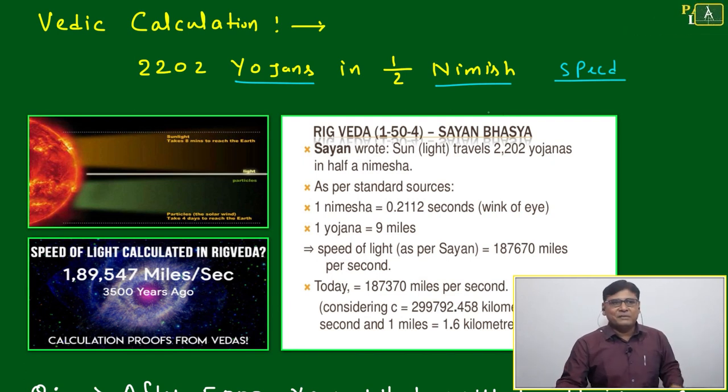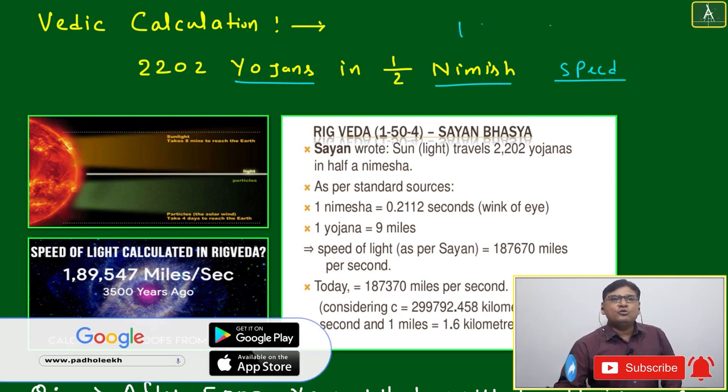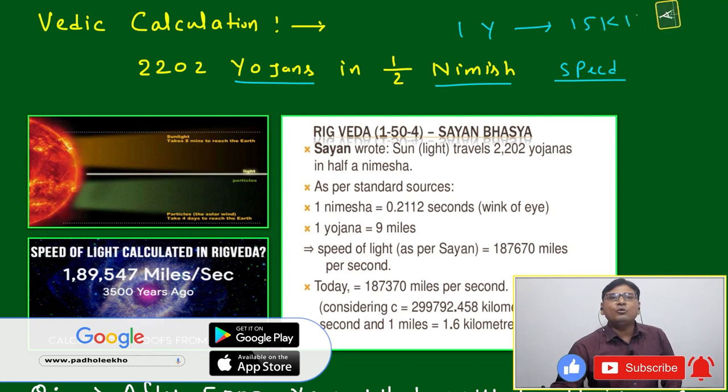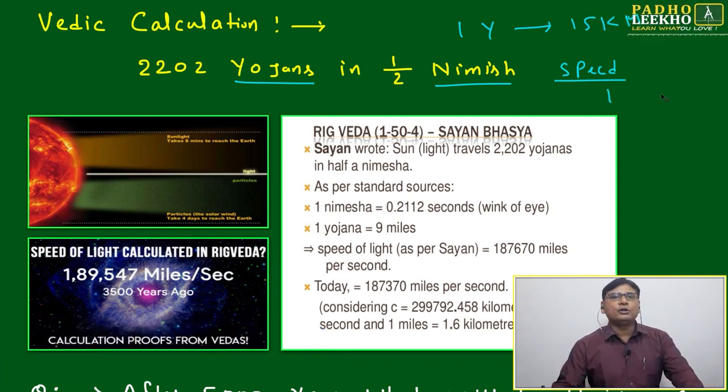2,202 yojanas - one yojana is almost equal to 15 kilometers. And one nimish we can say is almost equal to 0.2 seconds.